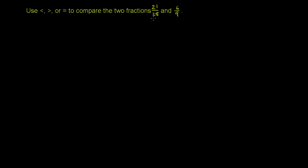What we could do is find a common denominator for both of them, convert both fractions to have the same denominator, and then compare the numerators. Or even more simply, we could simplify them first and then try to do it. Let me do that last one, because I have a feeling that'll be the fastest way.